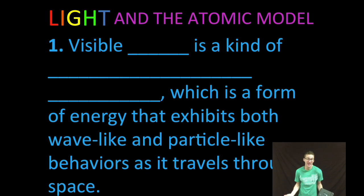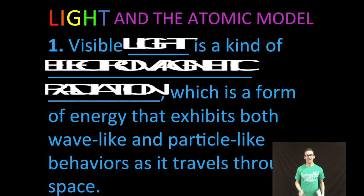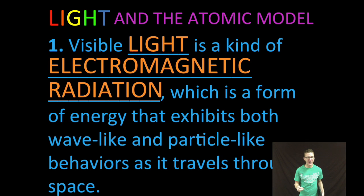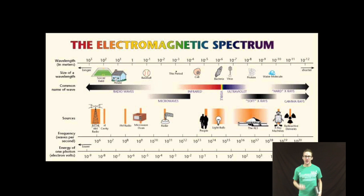Okay, so first of all, what the heck is light? Visible light is a kind of electromagnetic radiation, which is a form of energy that exhibits both wave-like and particle-like behaviors as it travels through space. Sort of this dual nature. Wave-like and particle-like at the same time. Now, as you take a look at your screen and also in your notes, you've got an image that represents the electromagnetic spectrum.